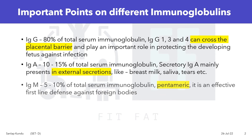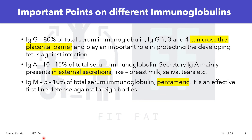Next is IgM. It constitutes 5 to 10% of the total serum immunoglobulin. It is pentameric and is an effective first-line defense against foreign bodies.